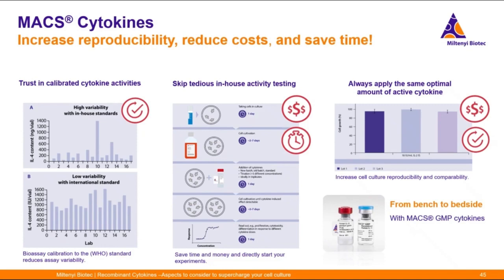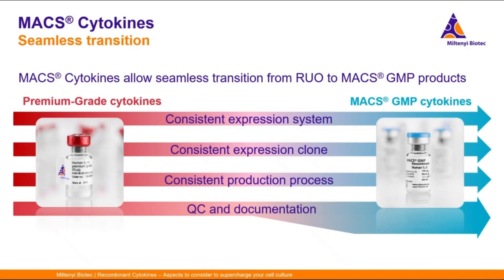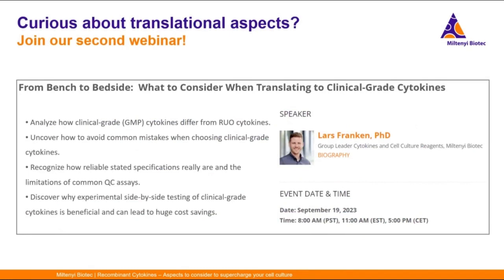One additional aspect is that with our premium grade cytokines, you can go from bench to bedside, as our cytokines allow seamless translation from research use only to max GMP products. They have a consistent expression system, consistent expression clone, and consistent production process under different regulations. For max GMP cytokines, there's a lot more QC and documentation. If you're curious to learn more about translational aspects, I encourage you to join our second webinar, 'From Bench to Bedside: What to Consider When Translating to Clinical Grade Cytokines,' where we'll take a closer look at clinical grade cytokines, product specifications, and QC assays — a great opportunity if you're working on a translational or clinical project involving cytokines.